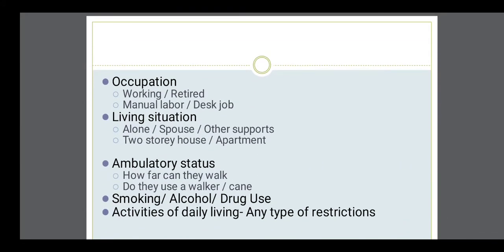Ask about the occupation of the patient — whether they are doing a desk job, are retired, or do manual labor. Ask whether the person is living alone or in a two-story house or apartment. We also have to ask about the ambulatory status — that means whether the patient is able to walk or not. Ask about the personal history of smoking, alcohol, and drug abuse. When examining the musculoskeletal system, you should definitely ask about activities of daily living.